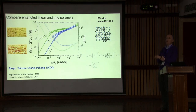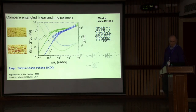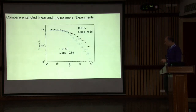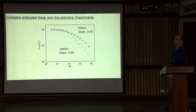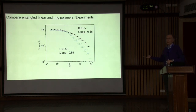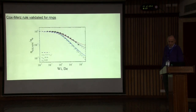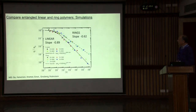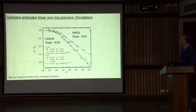Going back to Cox-Merz, the thinning of a ring should be much weaker than that of a linear polymer. Indeed, for two different molecular weights the linear has a thinning slope of 0.89 and the ring close to 0.6 — akin to a Rouse chain even though it's a ring. The Cox-Merz rule works for rings as well. MD simulation data from Kremer-Grest show very good agreement with experiments both for linear and ring polymers.